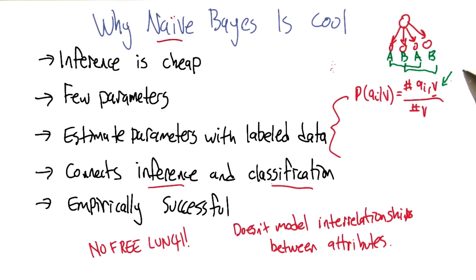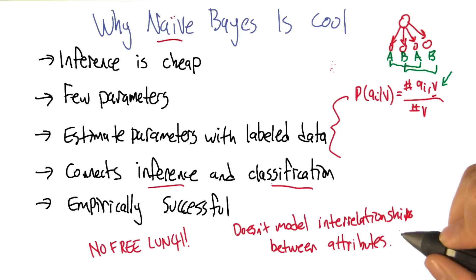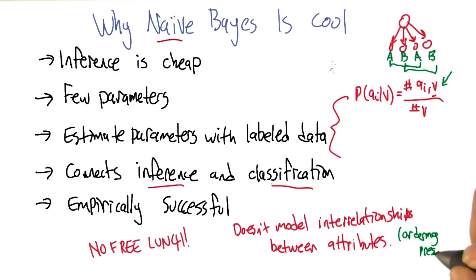You still get bad probabilities — the probabilities end up being kind of squared of what they're supposed to be. But that's okay, because the ordering is preserved. And even if the fourth attribute wasn't B but something else C, it doesn't matter if you double count A so long as it still gives you the right label. You could imagine that if you have weak interrelationships, or enough attributes, you would still get the correct label even if you got the probabilities wildly wrong.